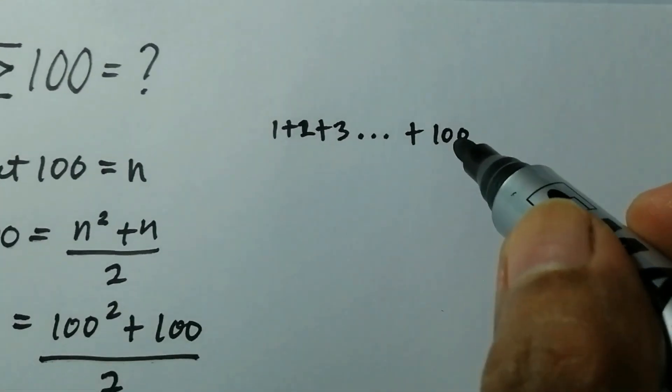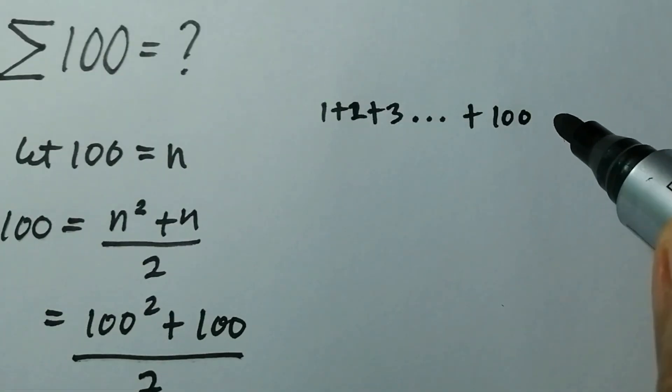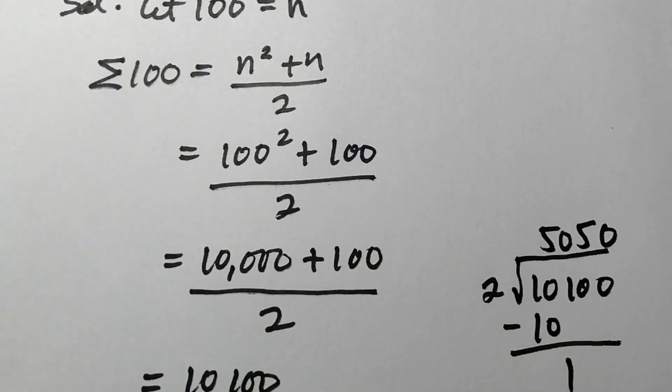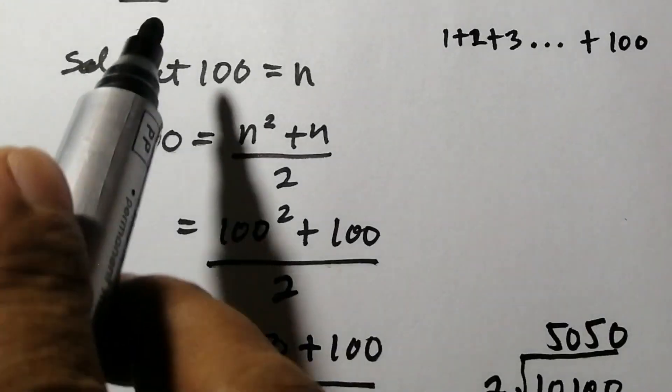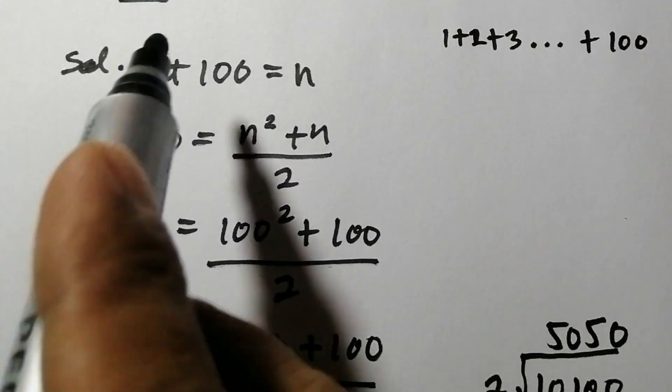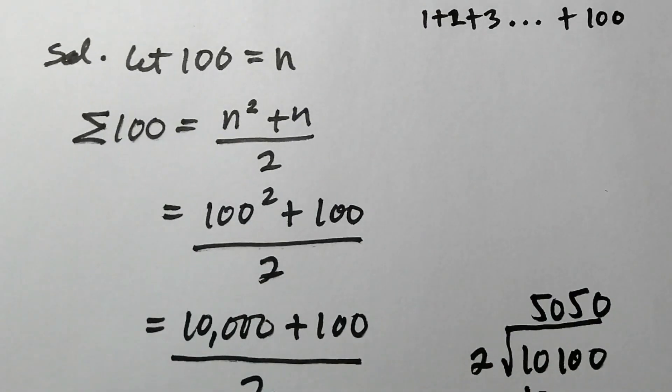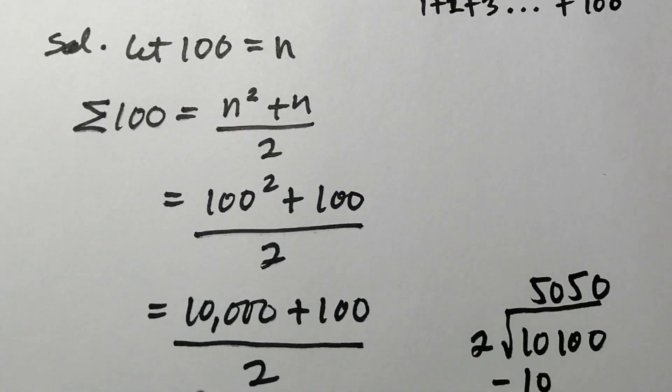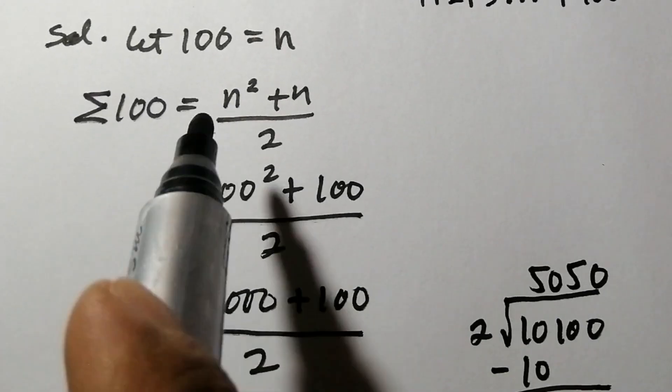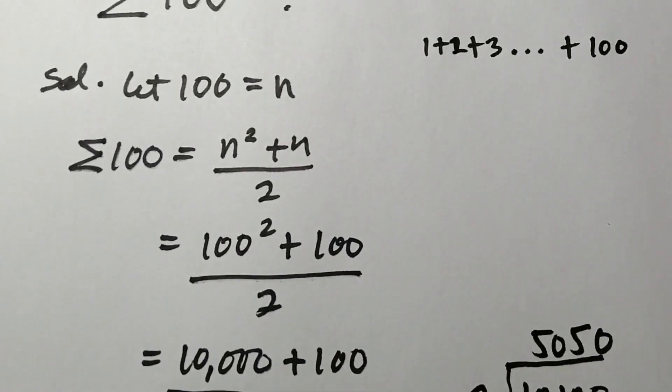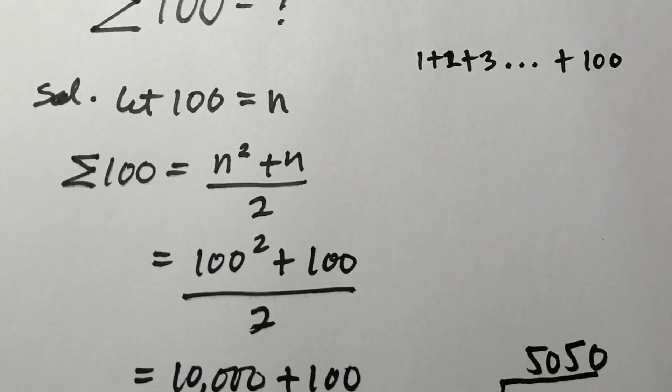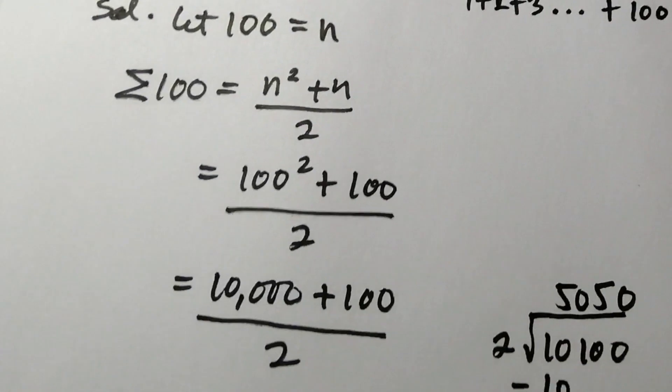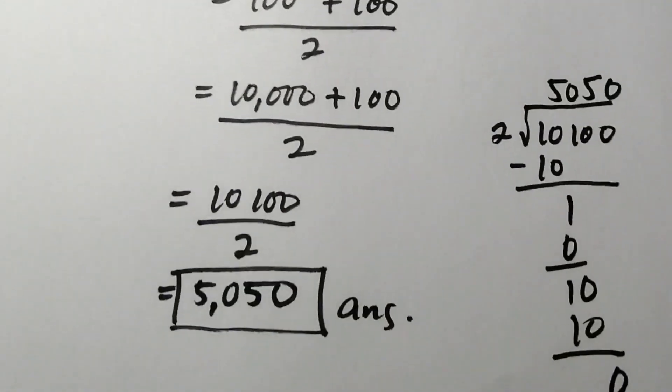All you have to do is just use this formula so that you can easily get the sum of any number, just like 100. For bigger numbers, it's easy to find the consecutive sum. This is a very good formula for getting the sum of a certain value, especially if it's a huge number.